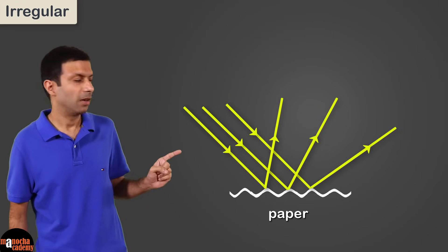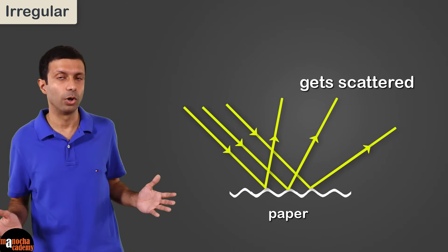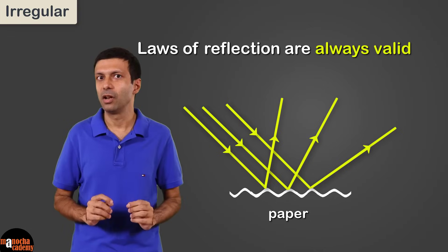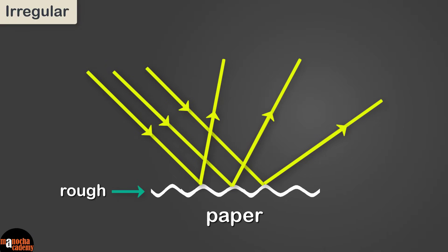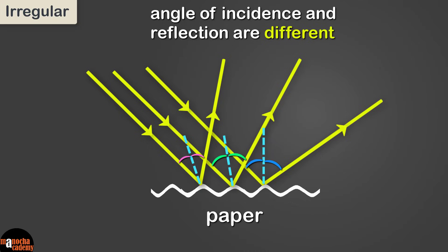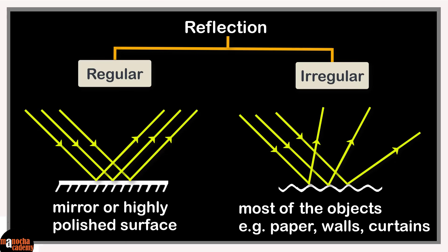Now let's look at irregular reflection. When a parallel beam of light falls on a surface like paper, it gets scattered in different directions. Is this because the laws of reflection don't hold here? No — the laws of reflection always hold. The paper seems smooth, but if you look closely at a microscopic level, the paper is rough. So the angle of incidence for the different rays in the beam are different, and so the angles of reflection will also be different — this is how the light gets scattered in different directions. This is called scattered, irregular, or diffused reflection.